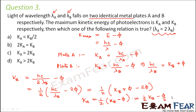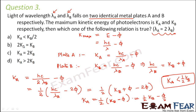So Ka = ½Kb − φ/2. This shows Ka is obtained by subtracting φ/2 from ½Kb, meaning ½Kb > Ka, i.e., Ka < ½Kb. Therefore option A is the correct answer.